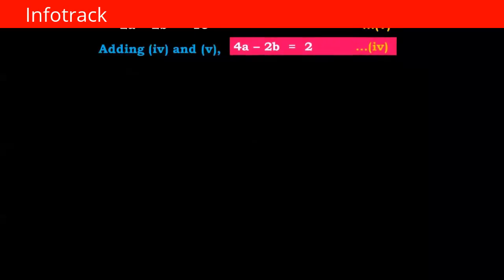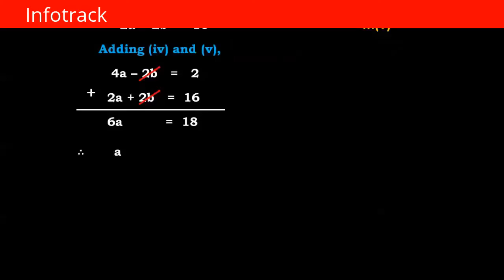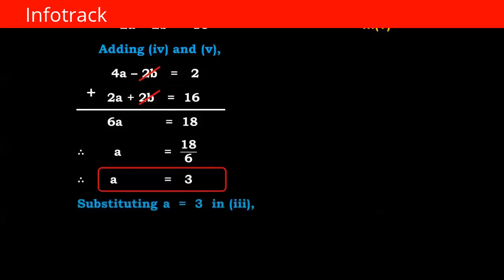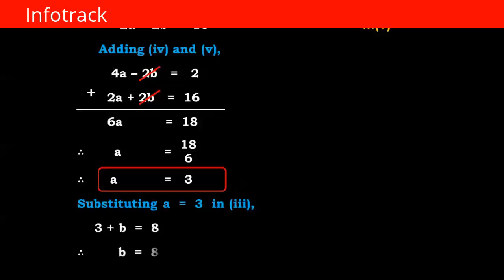Adding equations 4 and 5: 4a minus 2b equals 2, plus 2a plus 2b equals 16. After adding, plus 2b and minus 2b get cancelled. 4a plus 2a gives 6a equals 18, therefore a equals 3. Now substituting a equals 3 in equation number 3: 3 plus b equals 8, therefore b equals 8 minus 3, so b equals 5.